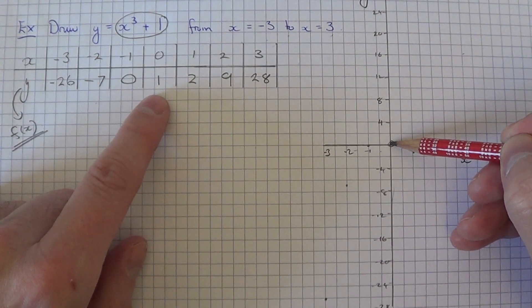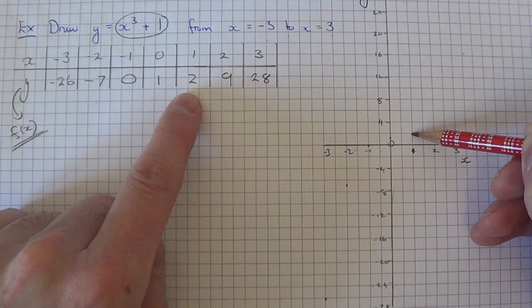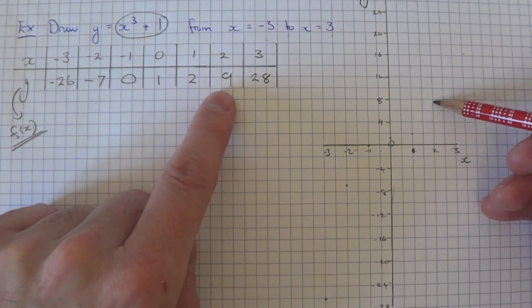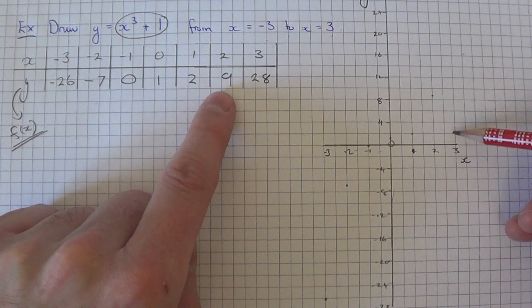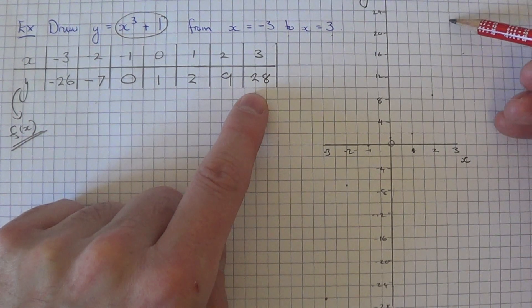0 is plus 1. At x equals 1, the y-coordinate was 2. At x equals 2, the y-coordinate was 9. And at x equals 3, the y-coordinate was 28.